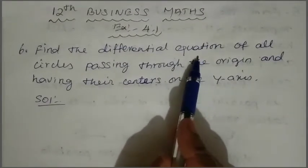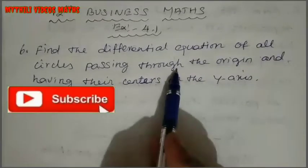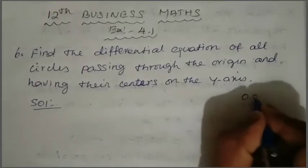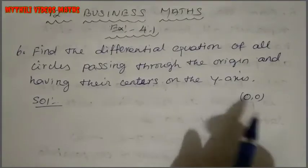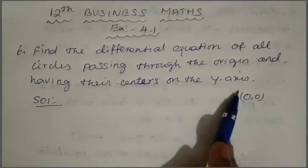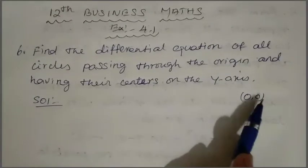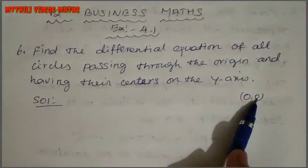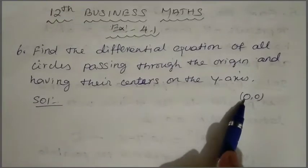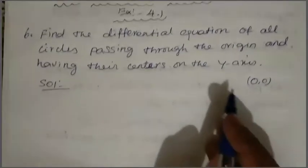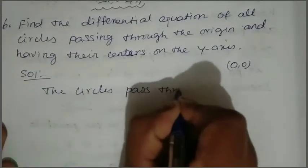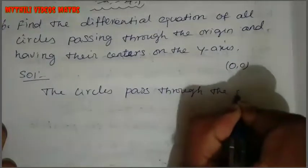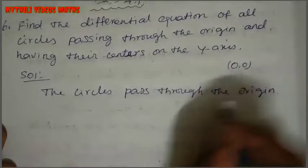We need to find the differential equation, that is dy by dx. The instruction is that the circle is passing through the origin. The origin is (0, 0). The circle passes through the origin — this is given.